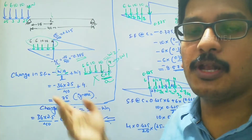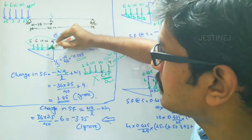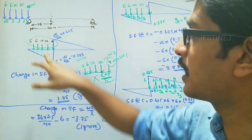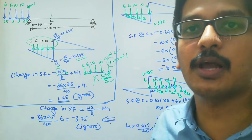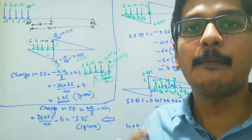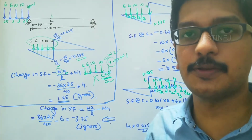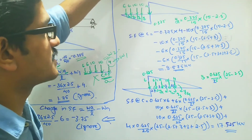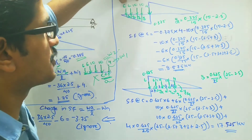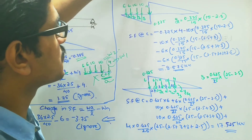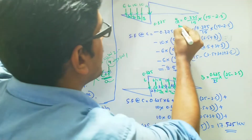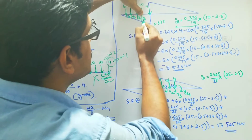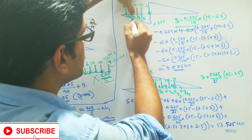We will now calculate each ordinate — what is the ordinate at each load position — multiply with each load, and then finally calculate the maximum negative shear force value. This condition is confirmed correct, so we can apply the similar triangle law to find each value y1, y2, y3, and y4.